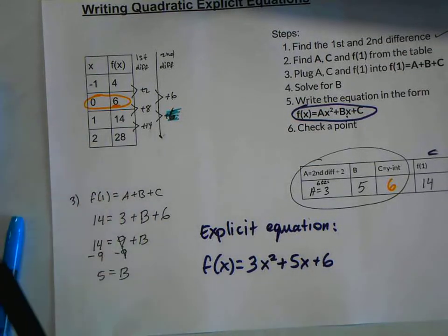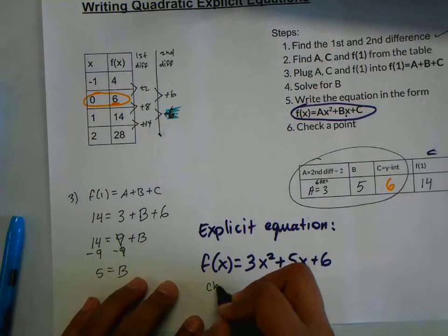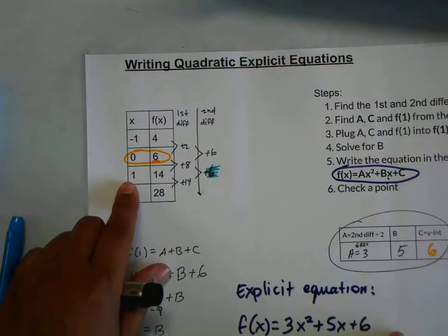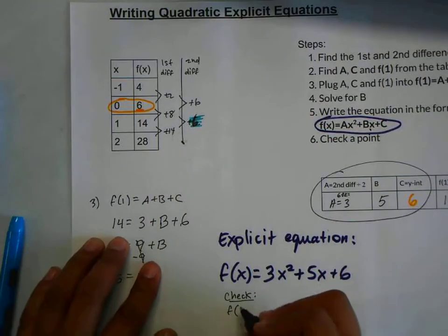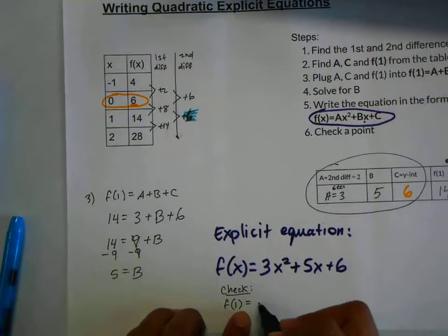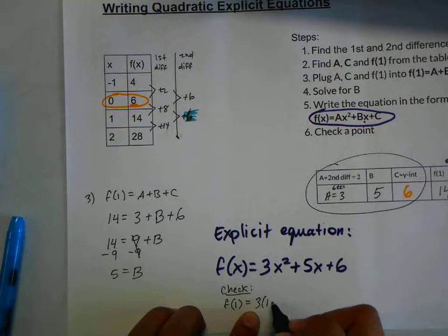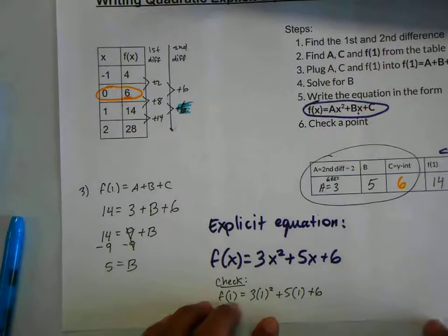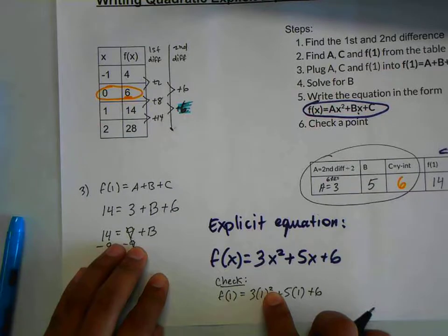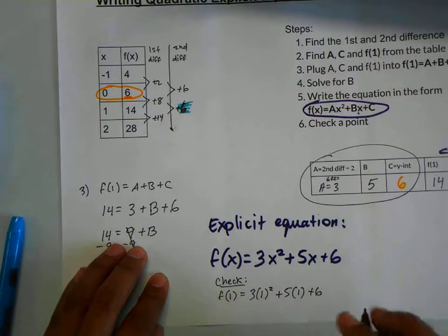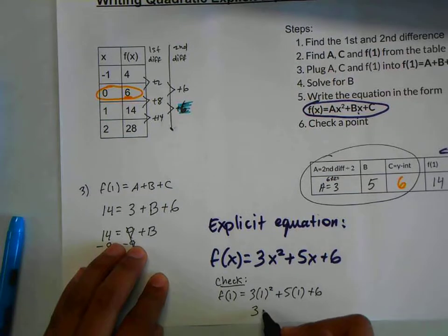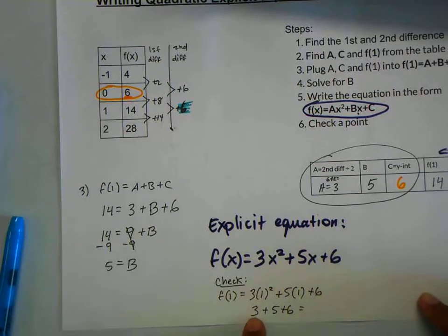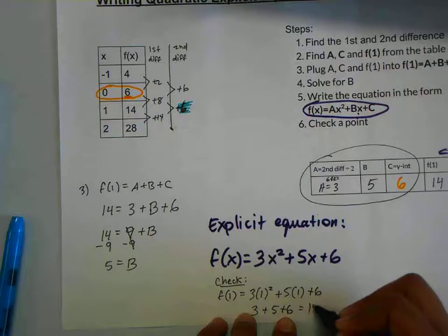But I'm not going to stop there. You have to make sure that you're doing this correctly. So I'm going to do a brief check here. I'm going to check the point f(1). For every x, I'm going to replace it with 1. So we have 3 times x squared, but I'm going to replace x with 1, plus 5 times x, replace x with 1, plus 6. Make sure you do the exponent before multiplying. 1 squared is just 1 times 3 gives us 3. 5 times 1 is 5, plus 6. 3 plus 5 is 8. 8 plus 6 is, in fact, 14.